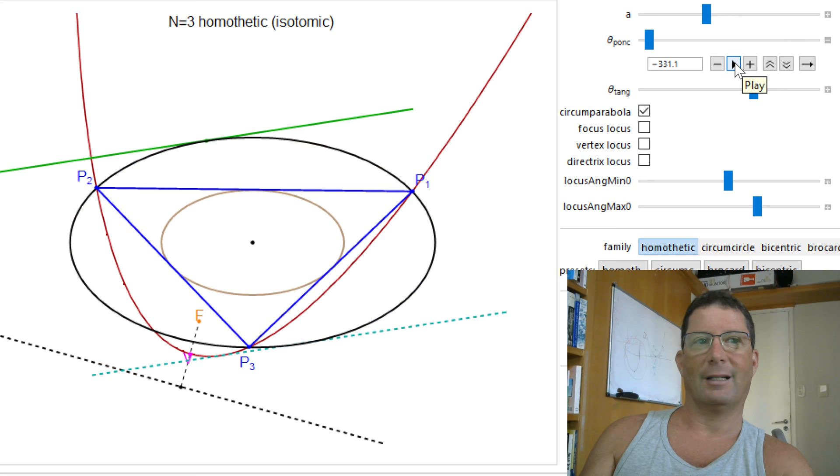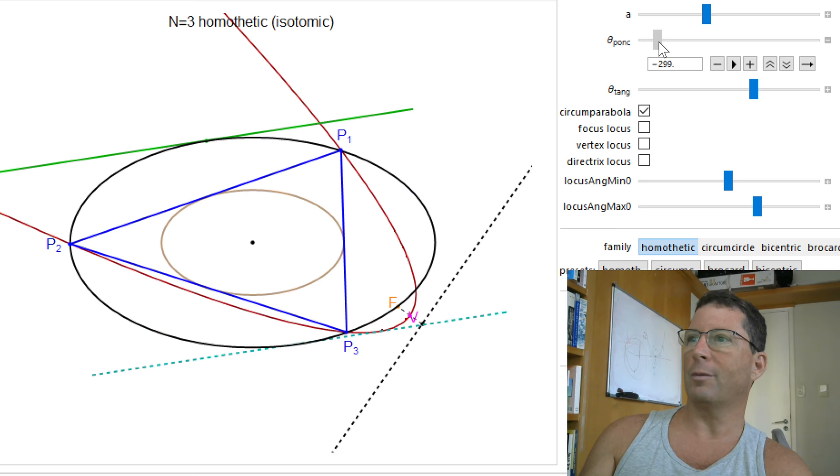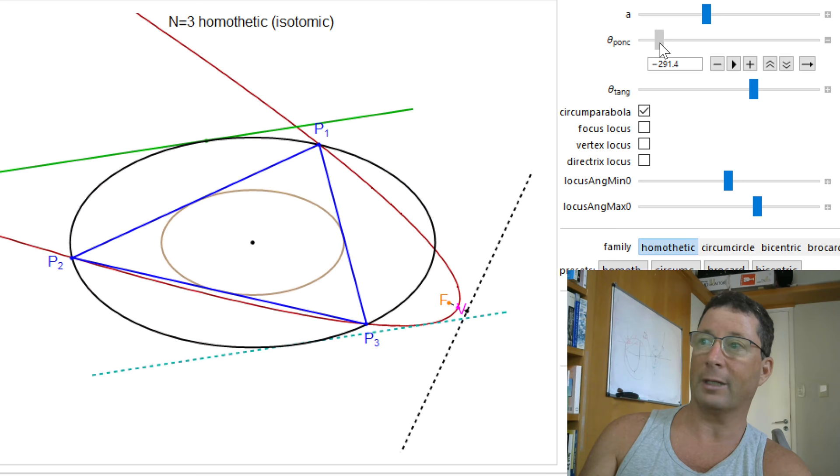Now, I want you to notice a very curious phenomenon. I don't think this is known. All these circumparabolas are tangent to the reflection of this tangent with respect to the centroid of the system. So if I jog my poncelet, the family of circumparabolas corresponding to that green line, you know, specifically that they are the isotomic images of that green line. And by the way,